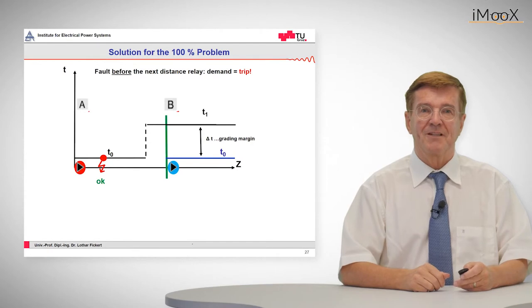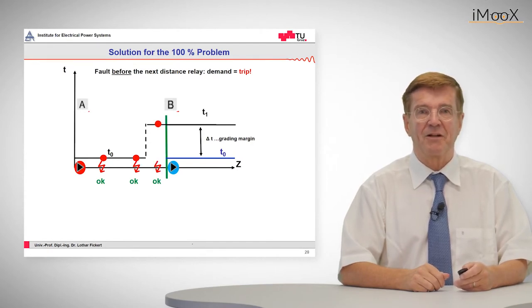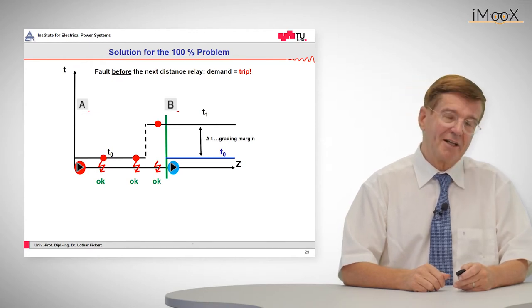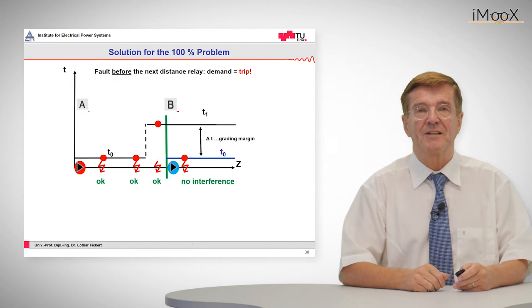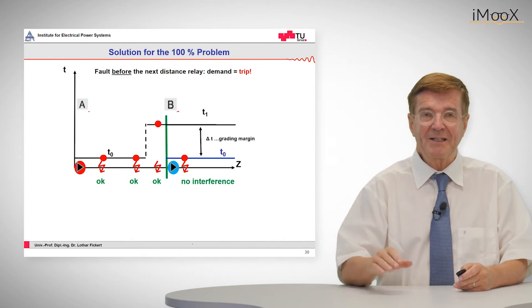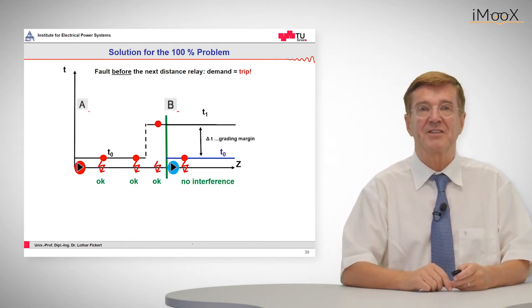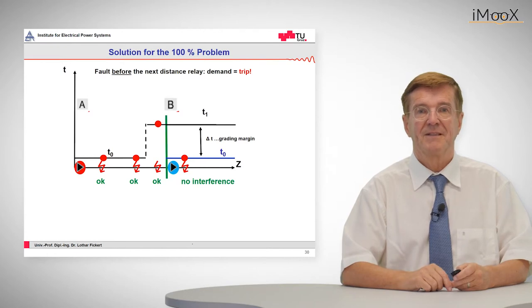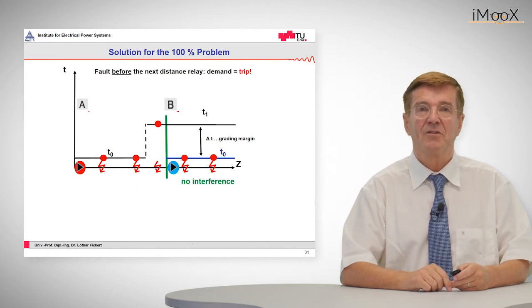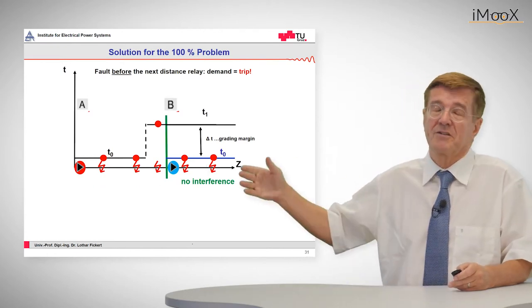So if we have a fault at the beginning of the line, in the middle of the line, we have a rapid trip. If we have a fault at the end of the line, we will have a selective delayed trip. If the fault is behind relay B, we have no interference because relay B will trip quickly and relay A will reset before it would reach its tripping time. So there is no interference, also not for trips further downstream.